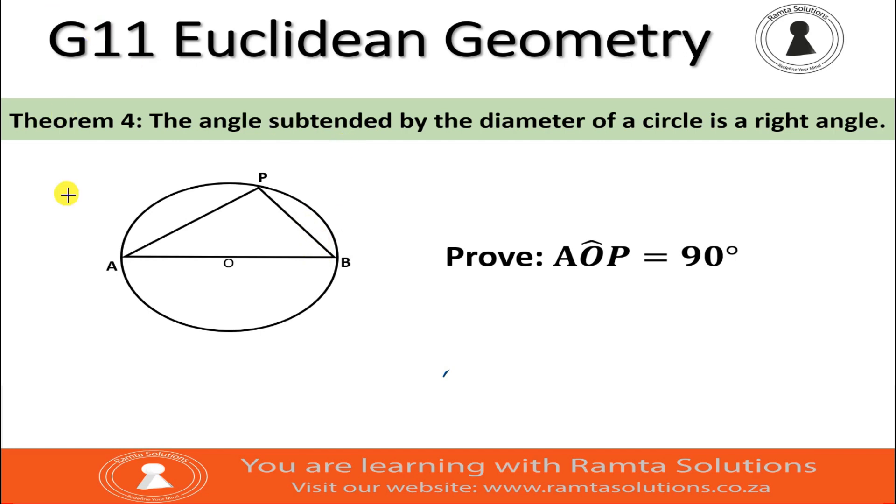So when you use this theorem, the reason you're going to provide will be as simple as angle in a semi-circle. As you can see, this somehow looks like a semi-circle, or even this top half is a semi-circle.